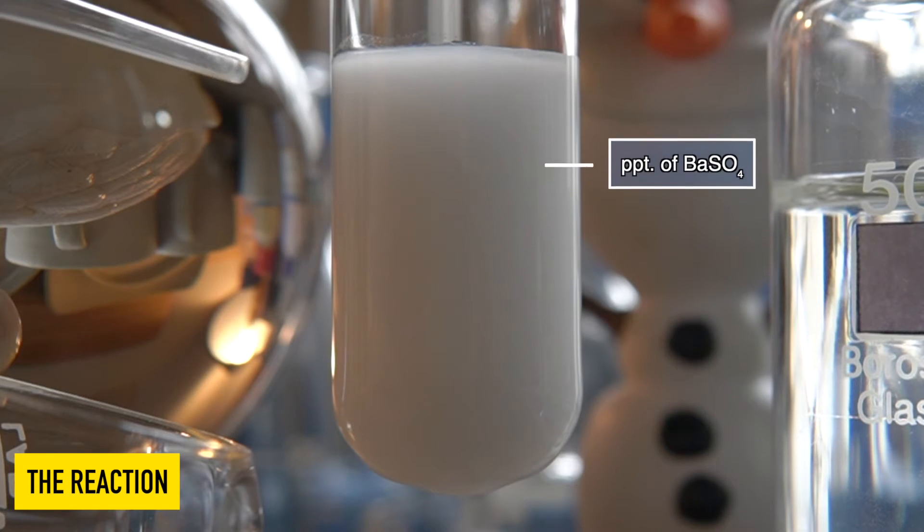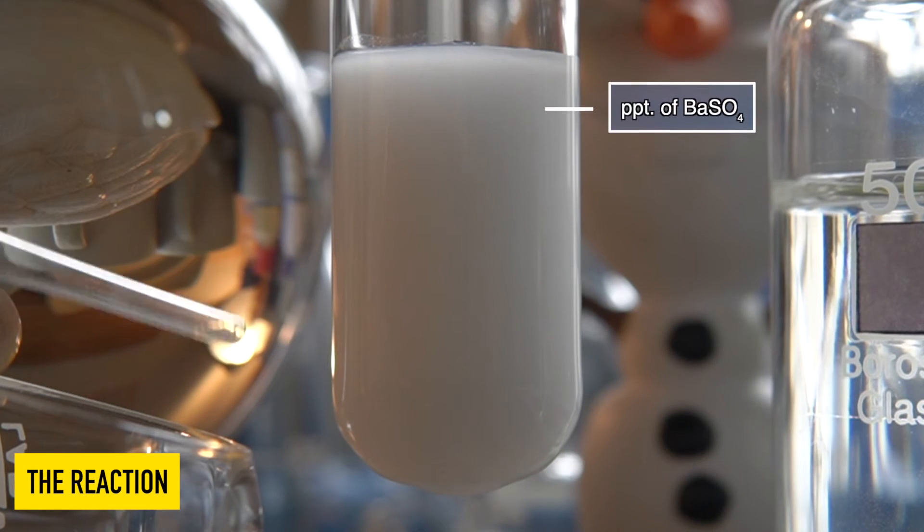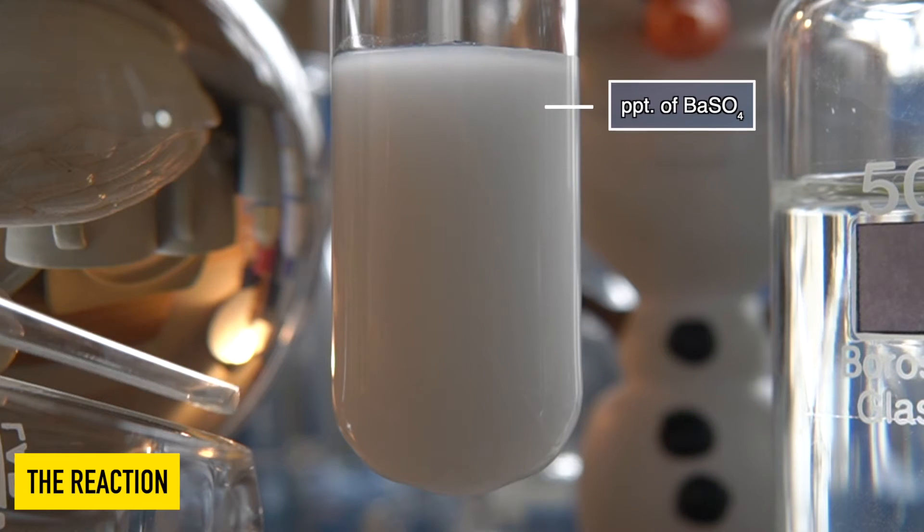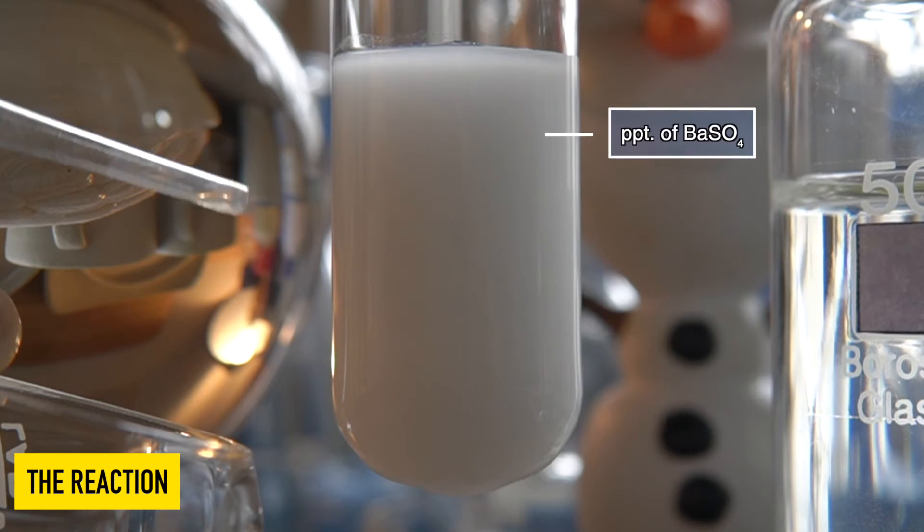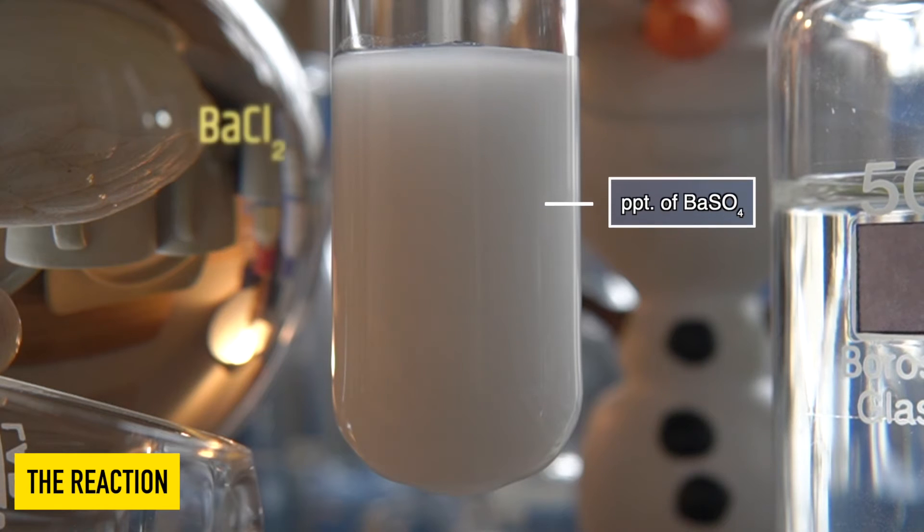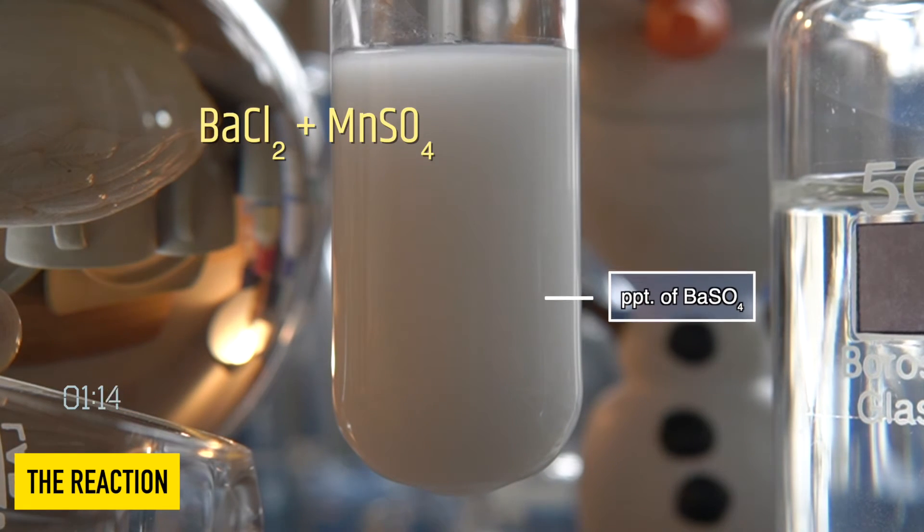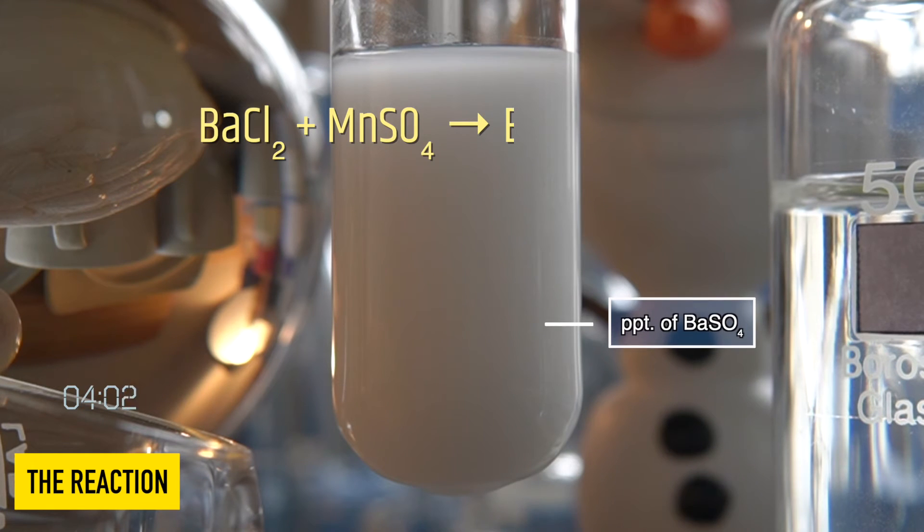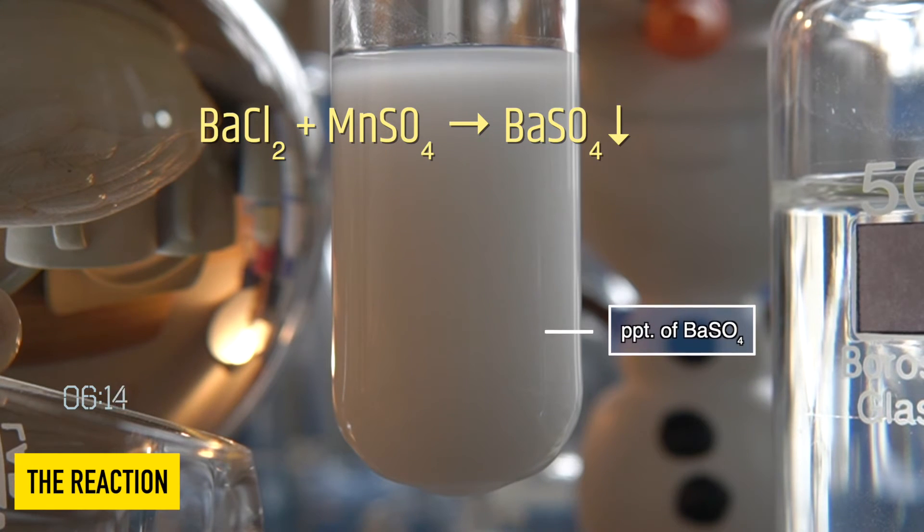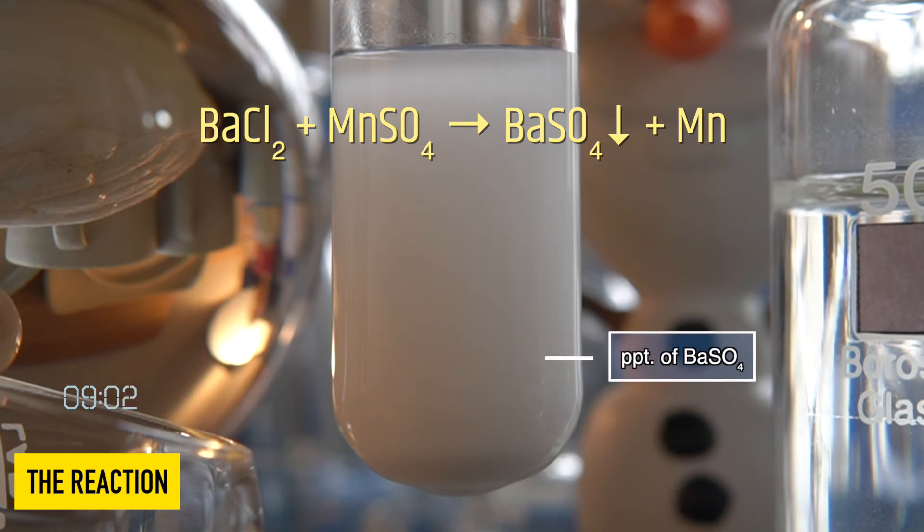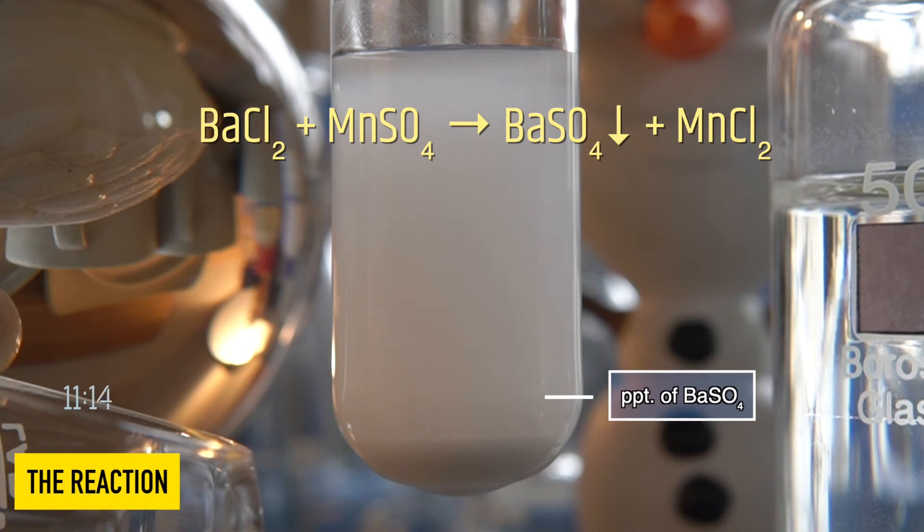The insoluble milky white precipitate that has been formed inside the test tube is nothing but barium sulfate. In this reaction, barium chloride reacts with manganese sulfate to produce an insoluble precipitate of barium sulfate along with manganese chloride.